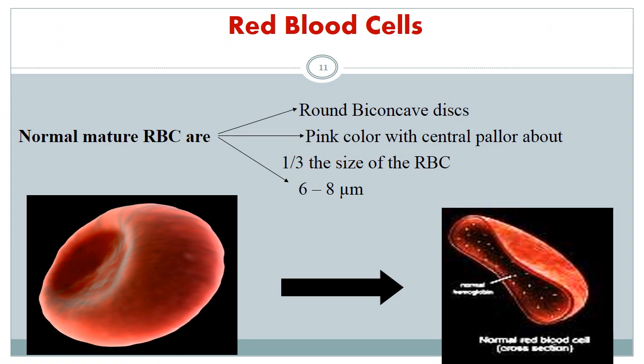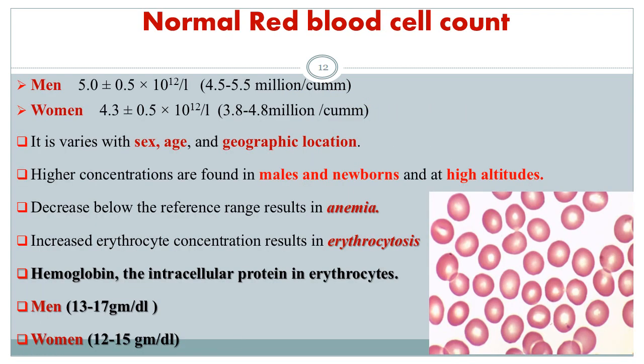Normal mature erythrocytes are biconcave disks, pale in color with a central pallor about one third the size of the erythrocyte. Normal mature erythrocytes are not able to undergo division, grow, or produce any protein. Normal cells with normal size and content are called normocytic, normochromic RBCs. Normal red blood cell count varies from male to female.